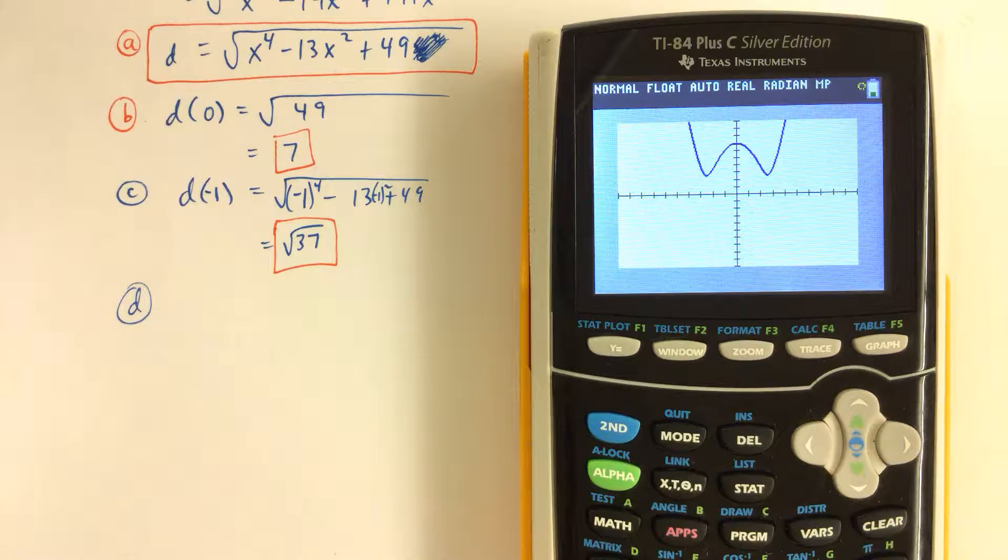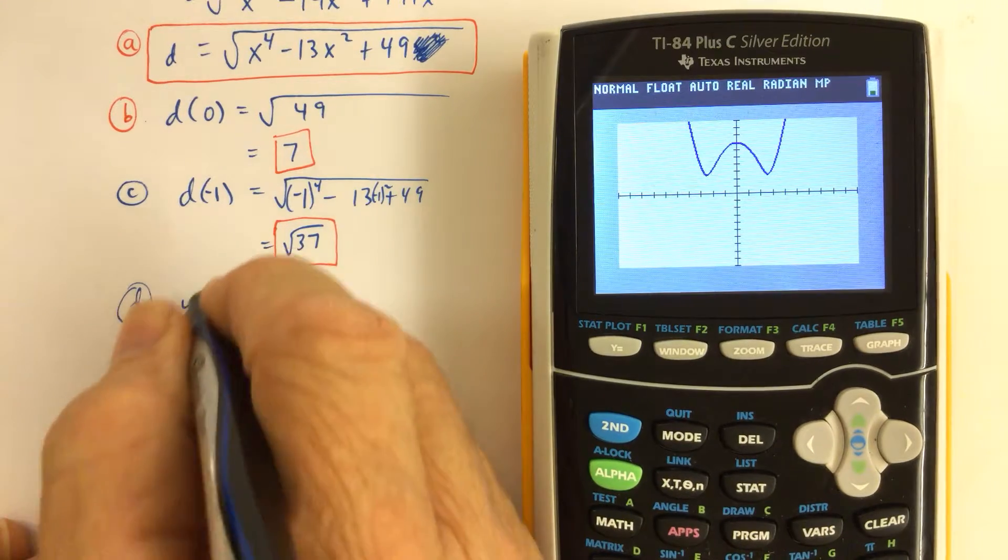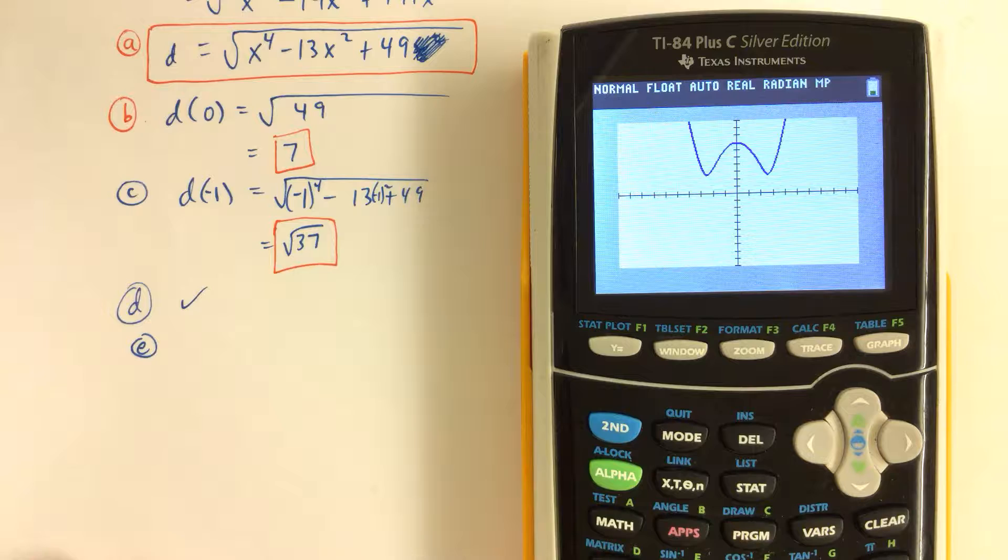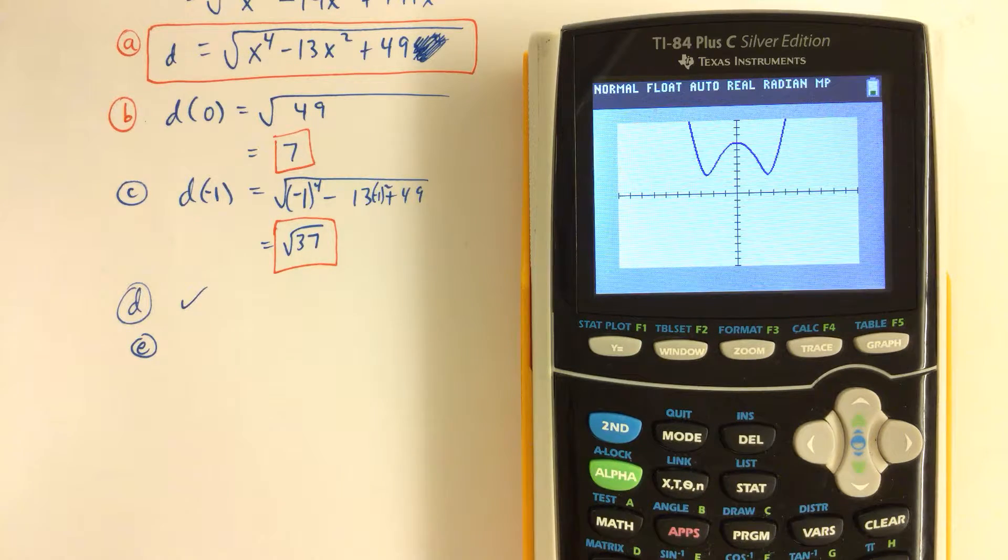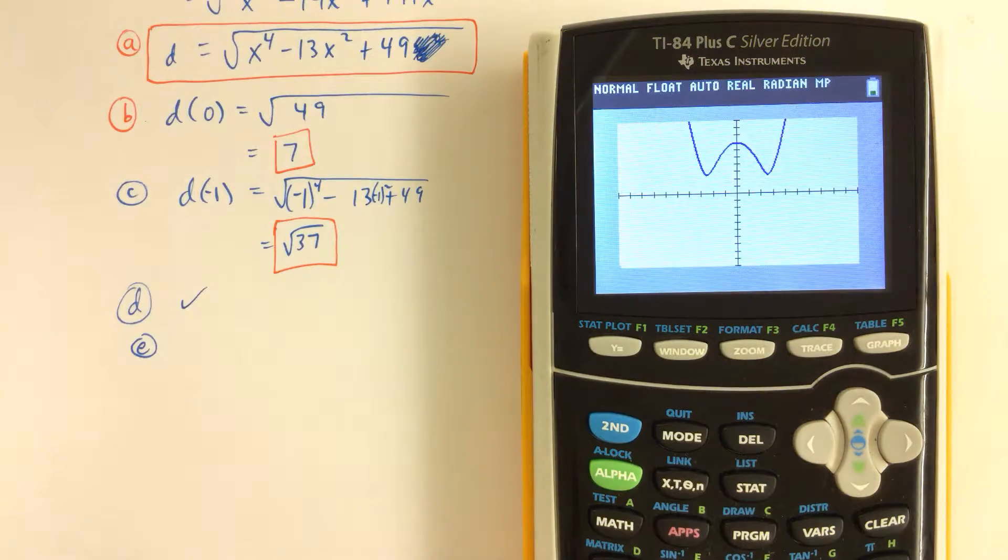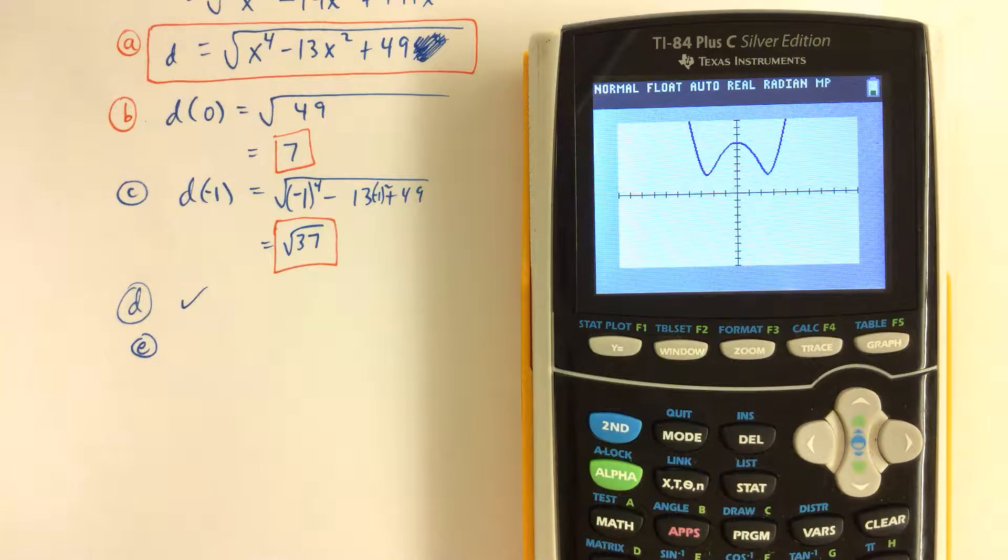And it says, for what—so part E, we get the shape of the graph, and then for part E, it's asking us to find for what values of X is D the smallest? Well, we can see that when X is somewhere over in the second quadrant and also in the first quadrant, that the values of D are the lowest.